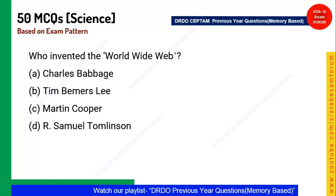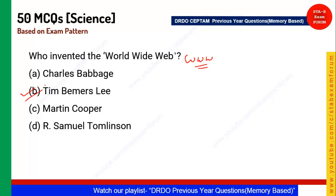Next question: Who invented the World Wide Web? WWW stands for World Wide Web, and it was invented by Tim Berners-Lee. Note that Charles Babbage is the father of computer — not the inventor of the web.